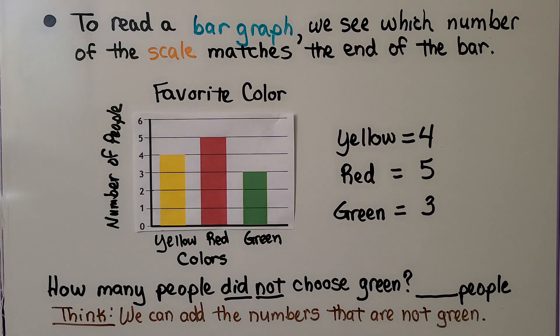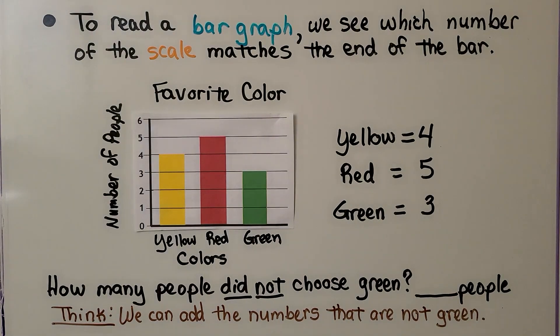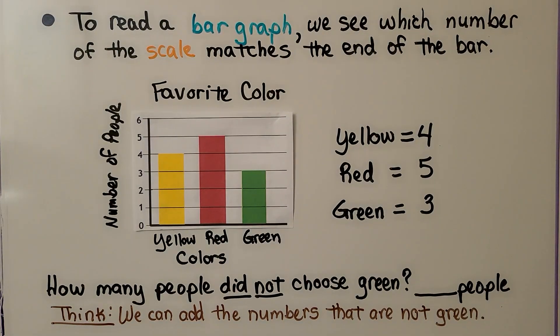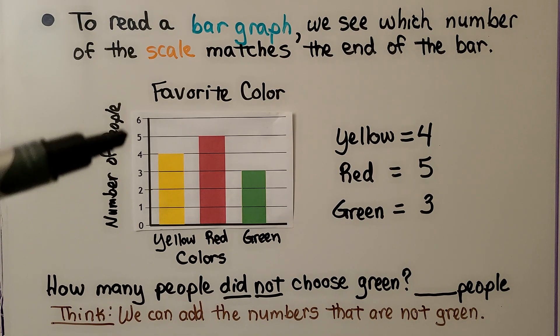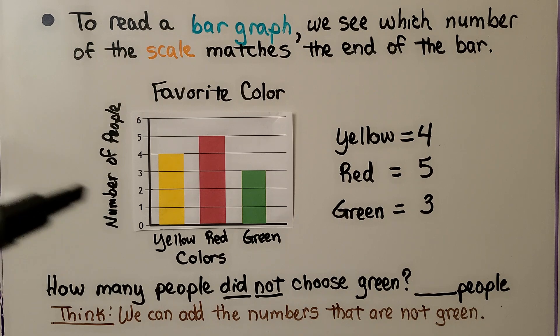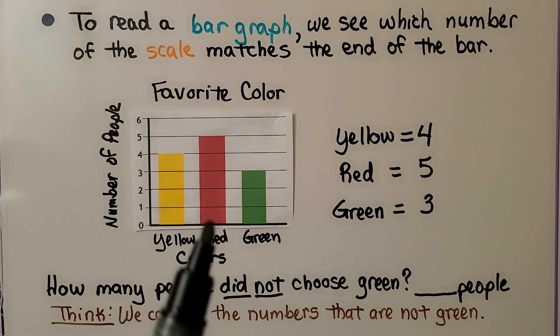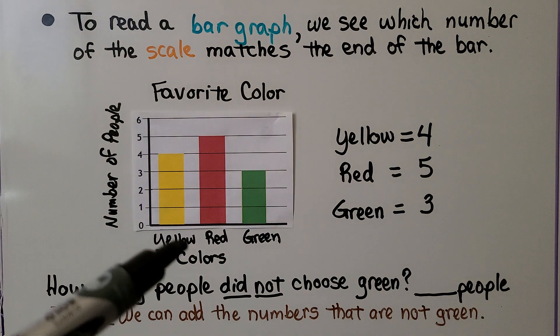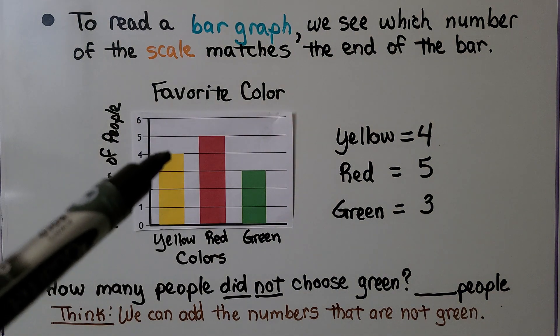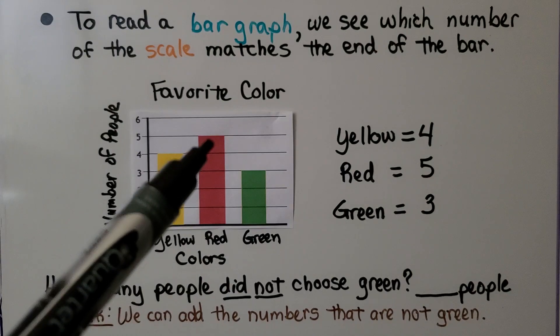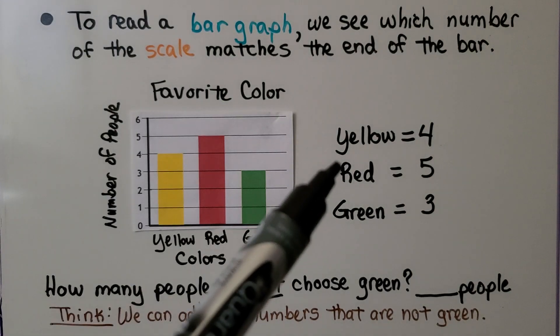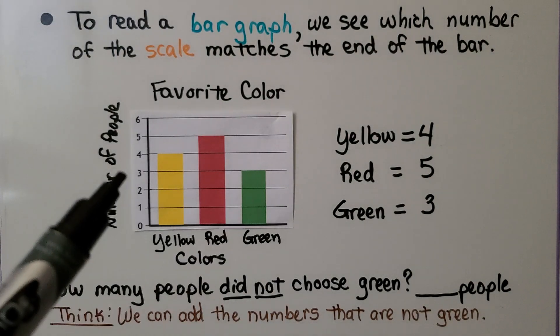So to read a bar graph, we see which number of the scale matches the end of the bar. This says favorite color. This is the number of people in our scale. And we see the color choices were yellow, red, or green. And we follow yellow up to here and we see yellow is four. We follow red up to here and see red is five and green is three.